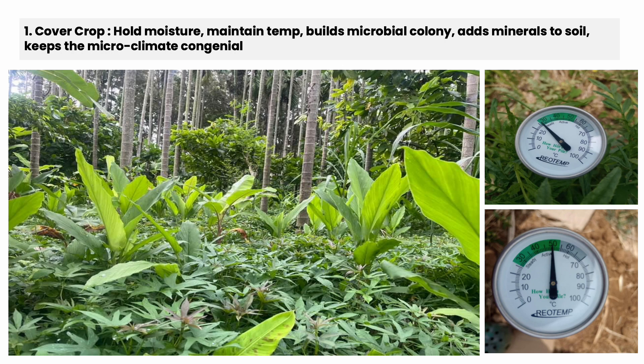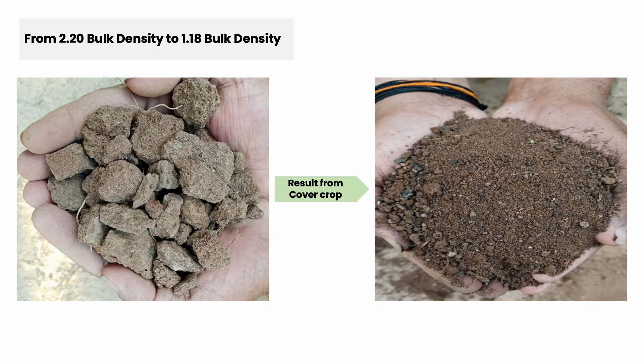This is a cover crop called sweet potato. We also have turmeric and others. This cover crop is fantastic — everyone knows it enhances microbial activity, reduces bulk density, and increases porosity. This year we inserted a temperature probe and got around 27 degrees Celsius inside the cover-cropped farm. In the neighboring farms under monocropping, we got around 50 degrees soil temperature. With this cover cropping system, the bulk density, which was around 2.2, is now around 1.18.